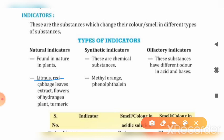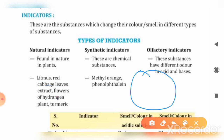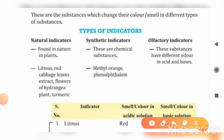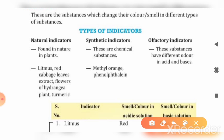Examples of natural indicators include litmus, red cabbage, leaf extracts, flowers, and hydrangea plants. Hydrangea plants have small petal-like structures and their flowers work as natural indicators. Turmeric is also a natural indicator. For synthetic indicators, common examples are methyl orange and phenolphthalein — these are common dyes you will find in your science laboratories.